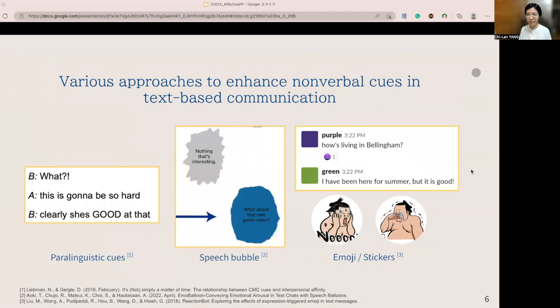To solve this problem, different approaches have been proposed to add social-emotional cues on text chat. For example, adding paralinguistic cues, changing the shape of speech bubbles based on the speech input, or sending emoji automatically based on detecting sender's facial expressions.